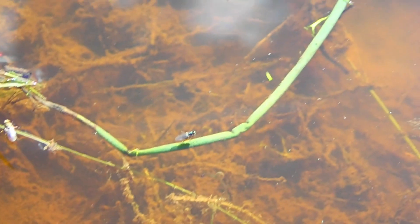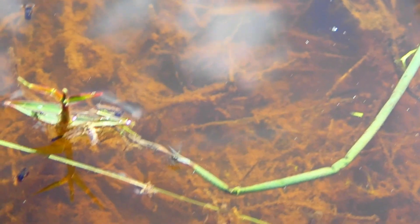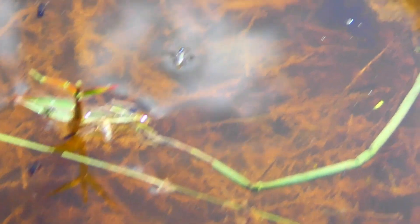Surface tension is also how some water bugs can stride across water without falling in and getting wet. As you can see here, the water bugs are just making little dimples on the surface and not sinking in. This is because the force they are putting on the water is less than the surface tension.